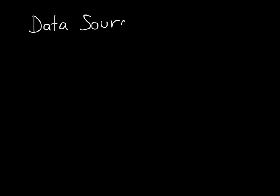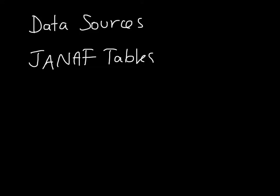We've been talking about values you could find in a handbook. Let's take a quick look at data sources. The primary data source used in this class is called the JANF tables. This acronym stands for the Joint Army Navy Air Force tables — they commissioned the work to compile the thermodynamic data. In a minute we will take a look at what that data looks like.